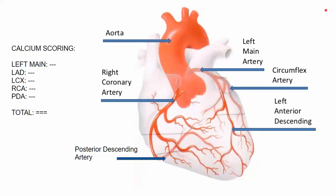This is a quick review of some of the arteries involved on the calcium score — the coronary artery calcium scan. On this scan, you will see references to several arteries on the report: left main, LAD, LCX, RCA, PDA, and a total score.